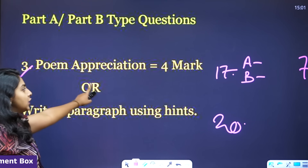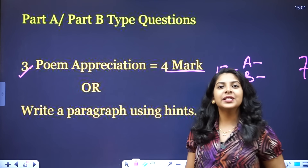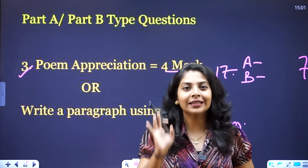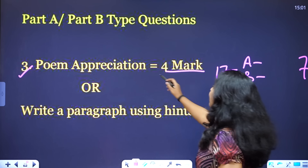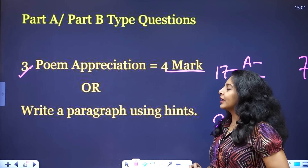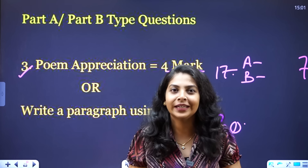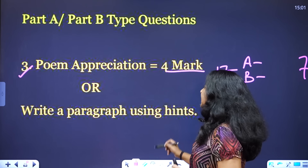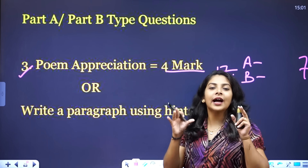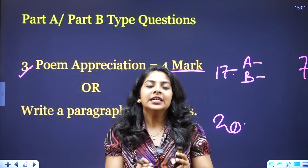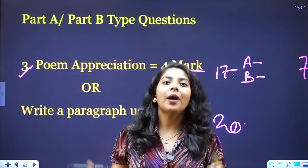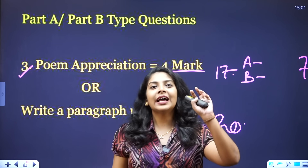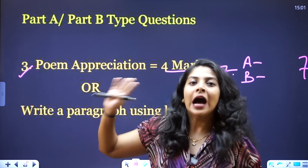In Part A and Part B, one is a Poem Appreciation. Four marks are for Poem Appreciation. In the Poem Appreciation, you will ask a question. You will ask a paragraph using hints. That is a letter. If you ask a question, you will ask a few hints and a few points. You will ask a paragraph.